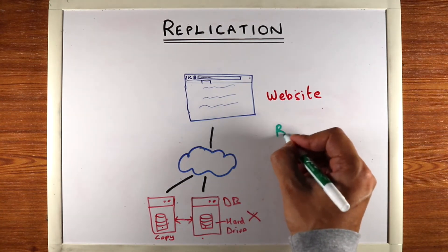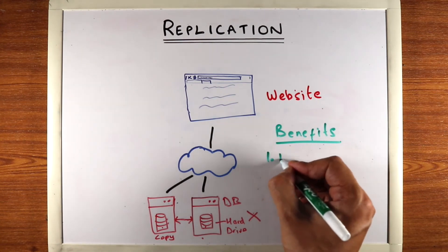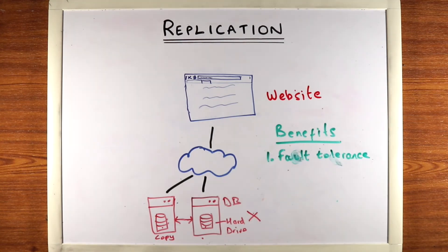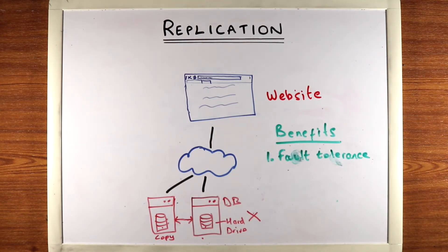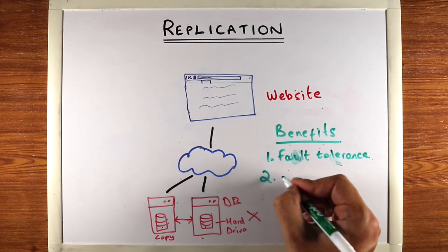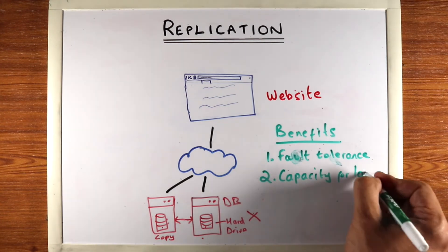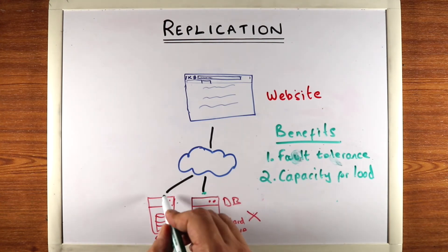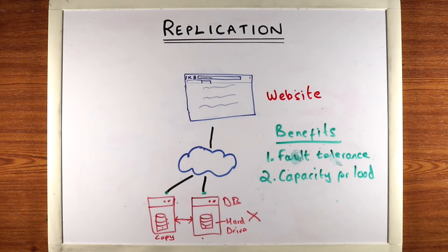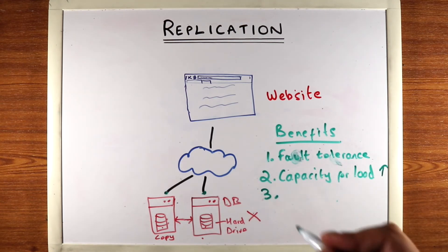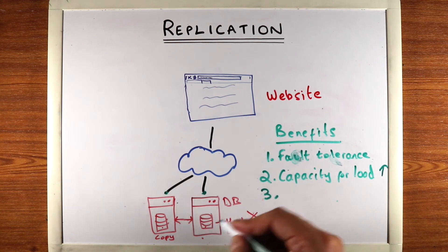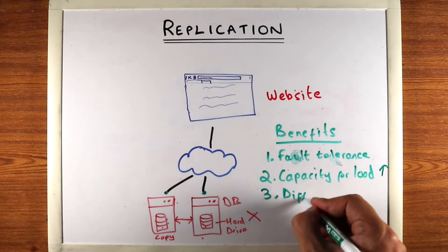What are the benefits of this? Number one, we are now somewhat fault tolerant — if one machine goes down the other can take over. You also have more capacity for load: if one machine gets overloaded, the other machine can serve read requests and, depending on the setup, may also serve write requests. So you have an increased capacity for load.